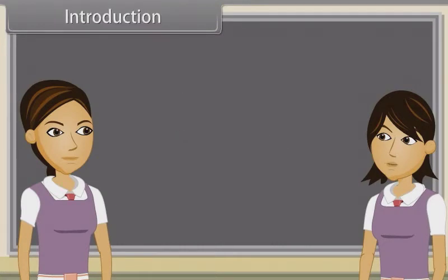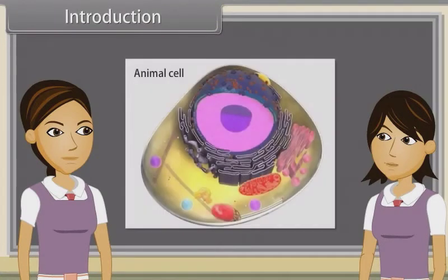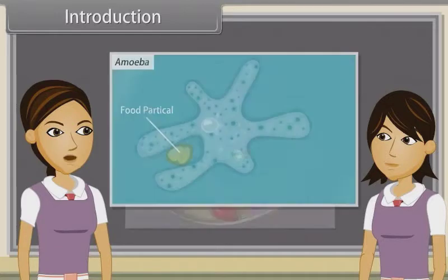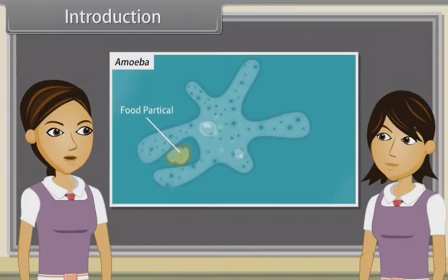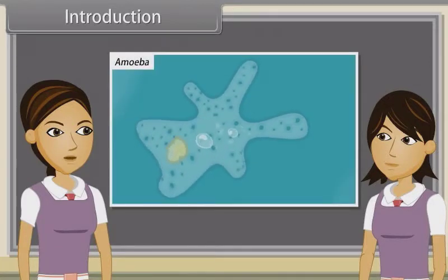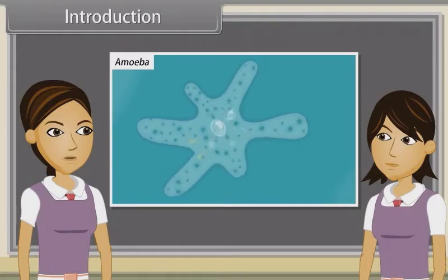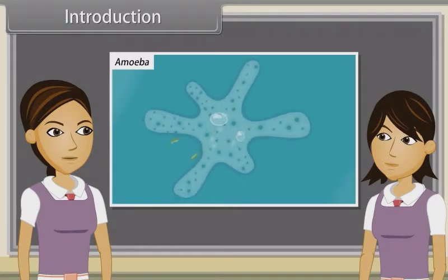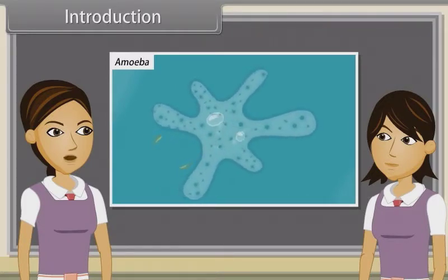Hey Ankita, we know that the cell is the structural and functional unit of life, but do you know what it actually means? It means a single cell can perform all basic functions of life — for example, movement, intake of food and respiratory gases, respiration and excretion.